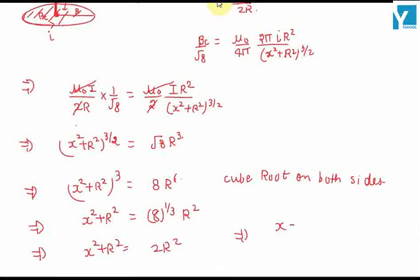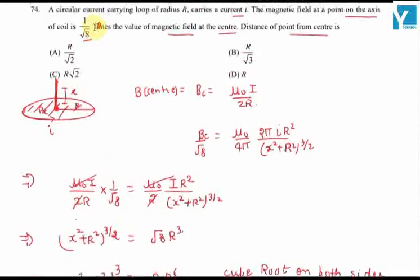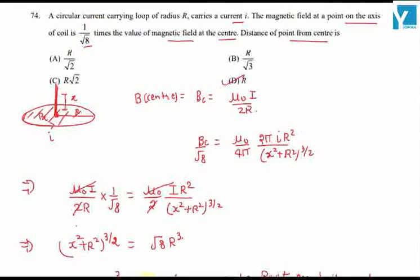This implies x square equals R square, so x equals plus minus R. Now if we look at the options, option D is the right answer.